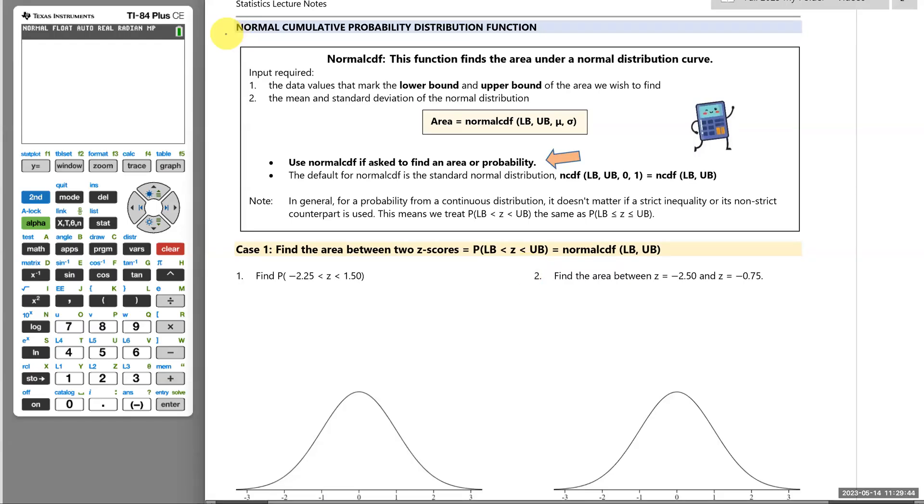Welcome back. We are now going to take a look at using the normal CDF function to find area under a normal distribution curve. In order to find area under normal distribution, we shall use our normal CDF, which requires four inputs: lower bound, upper bound, mu, and sigma.